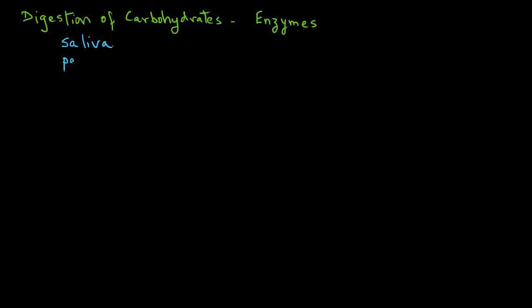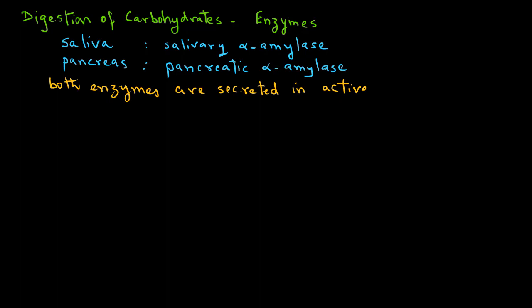First, the salivary alpha-amylase that is present in the saliva, and the pancreatic alpha-amylase that is present in the pancreatic juice from the pancreas. Both these enzymes are secreted in their active forms.